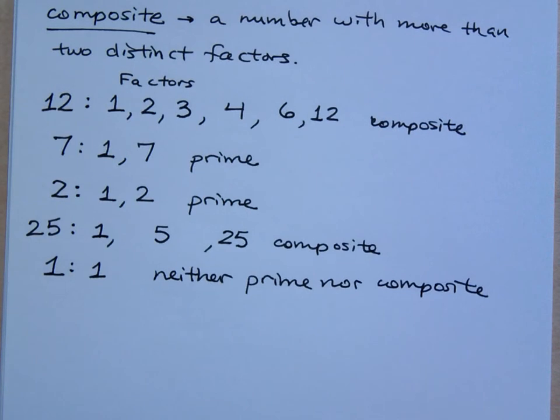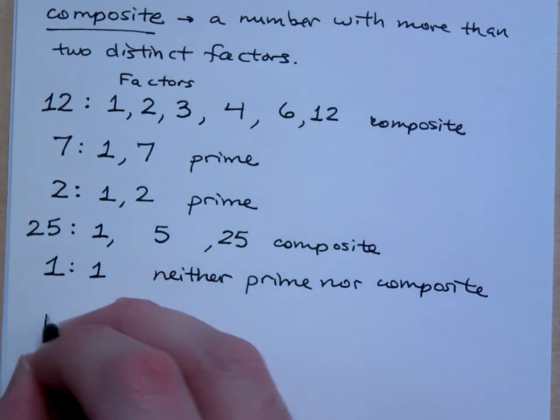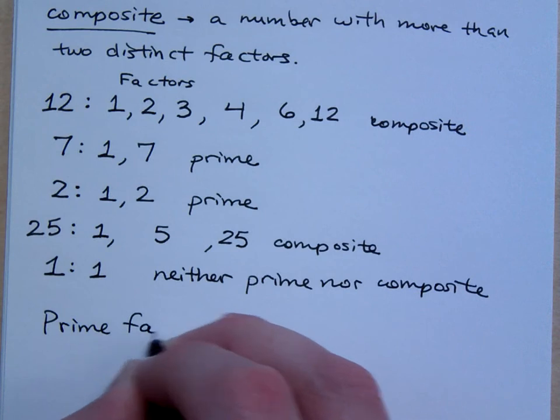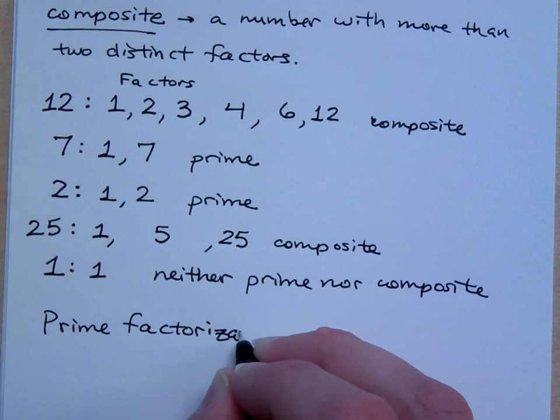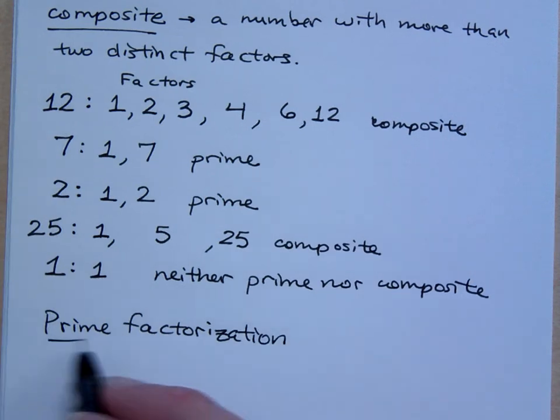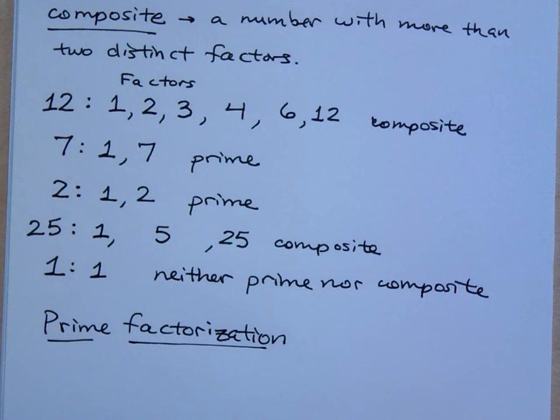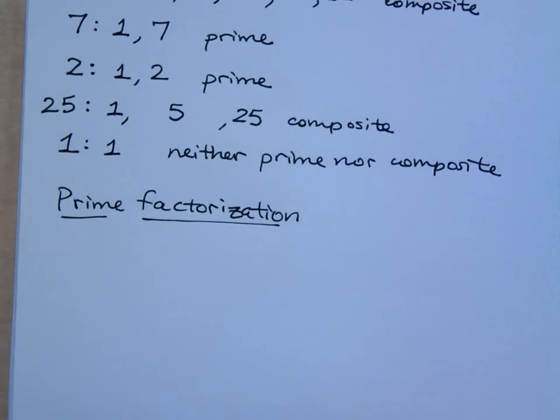Now, one of the things that we like to do is what's called a prime factorization. This is actually one of my favorite things to do. I get a lot of fun out of this. In a prime factorization, you take a number and you break it all the way down into its prime factors. There are a lot of different ways of doing this. I'm a big fan of factor trees.